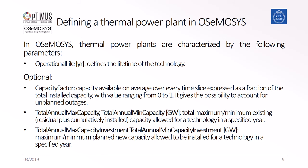Total annual max capacity and total annual min capacity is the total maximum and minimum existing capacity in a specified year — residual plus cumulatively installed capacity allowed for a technology in that year. The total annual max capacity investment and total annual min capacity investment is the maximum and minimum planned new capacity allowed to be installed for a technology in a specified year. So the total annual max capacity includes the residual capacity and all installed capacity up until that year, while the total annual max capacity investment is isolated to that individual year.